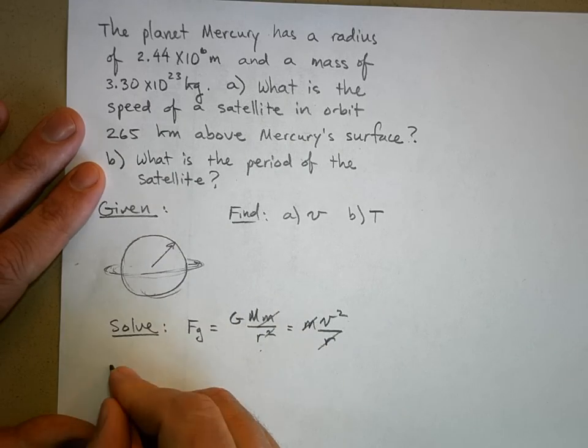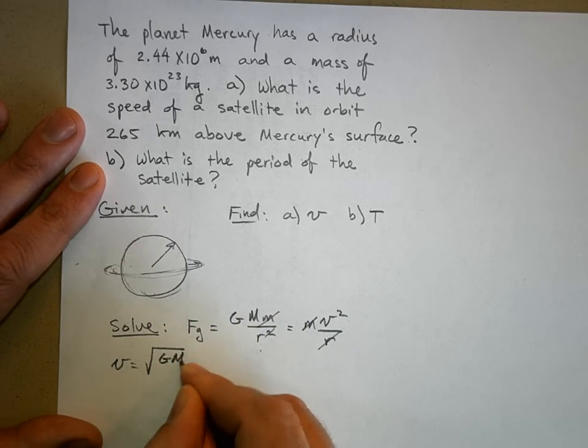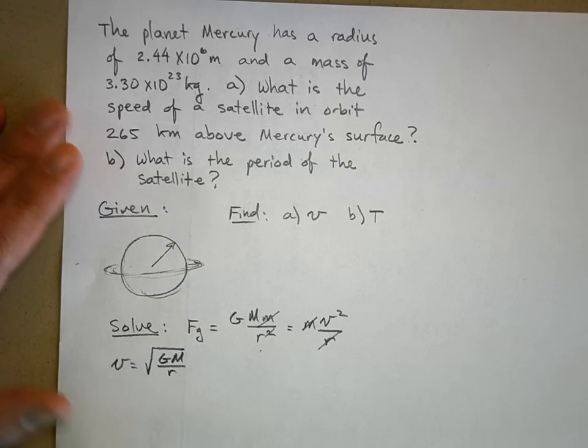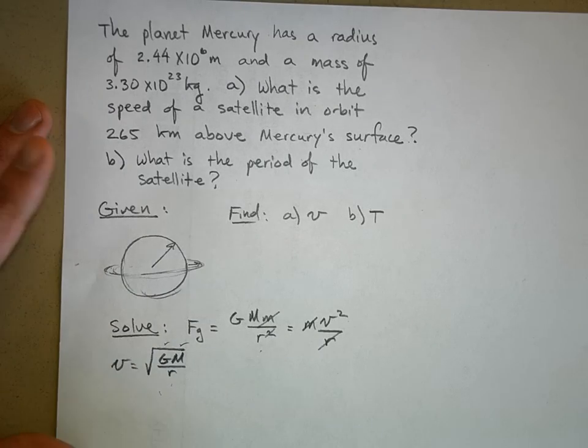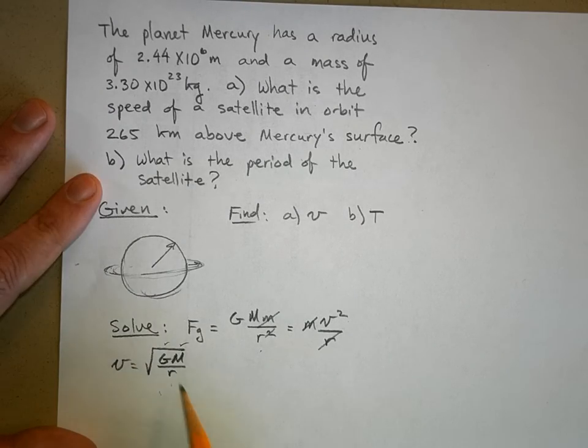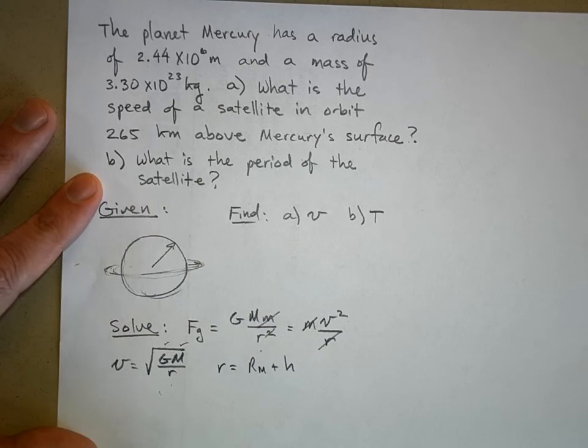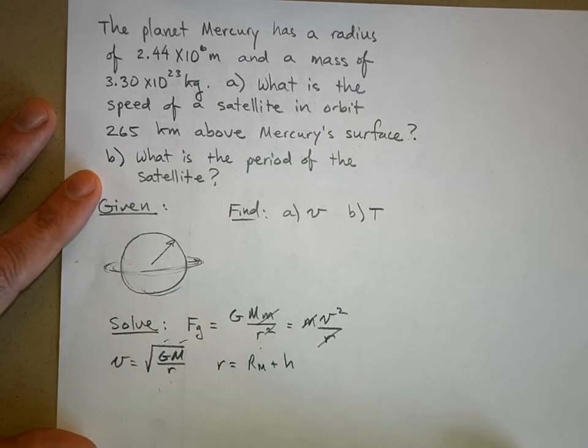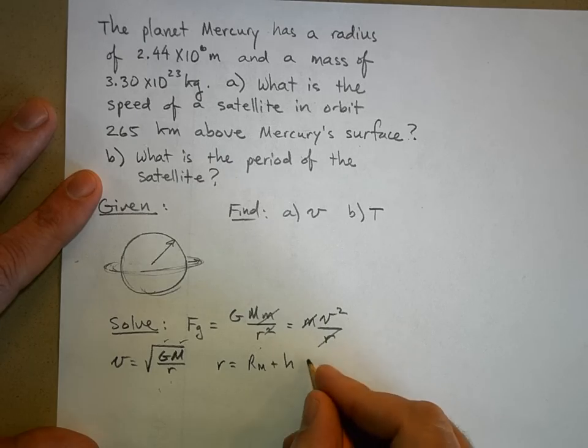So v is the square root of G M over r. It's perfectly okay to start there, but now we know what G is, we know what M is, but we need to figure out what the radius of our orbit is. The radius of the orbit is equal to the radius of Mercury plus our height above the surface.